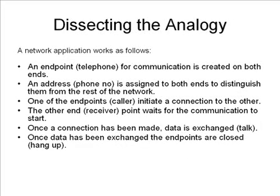Now let's dissect this analogy and generalize for a network application. For any network application — whether it's a telephony network, a satellite network, a mobile network, or the internet itself — some things are required. First, an endpoint for communication is required on both ends. Second, an address is required, which in the previous case was a telephone number, to distinguish each endpoint from the rest of the network. Once these two things are in place, one endpoint would have to initiate a connection to the other, and the other endpoint would have to be in a ready state to receive that connection. Once the connection is established, both endpoints can exchange data. And once all data has been exchanged, they close that connection.